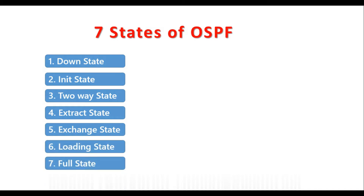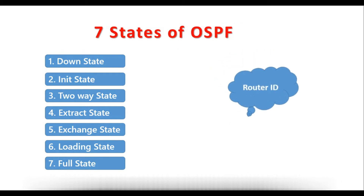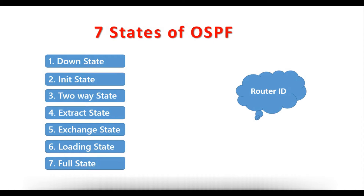Before going into the states, we need to understand one more important thing — the Router ID. The Router ID is like a name of a router which is used in OSPF. Generally we can configure it during OSPF configuration. Though it's not mandatory, it's a best practice. Even if you are not configuring the Router ID, the router will automatically assume one IP as the Router ID. There are some rules for it.